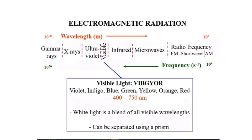There are two important factors: wavelength and frequency. The light that we can see is called visible light, which is in the visible region. Its wavelength is around 400 to 750 or 800 nanometers. When the colors — violet, indigo, blue, green, yellow, orange, and red — are mixed together, they form white light, which is the blend of all visible wavelengths. These lights can be separated using a prism.